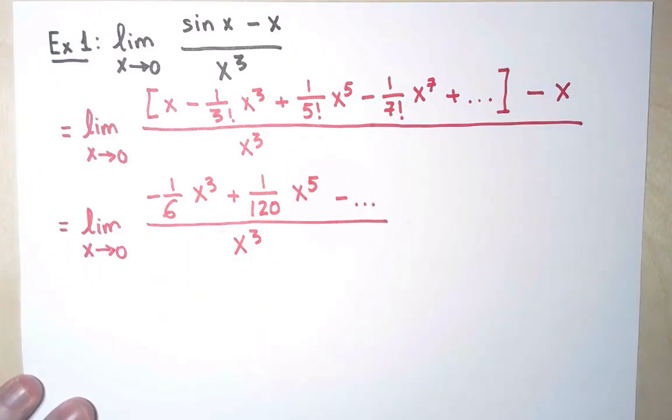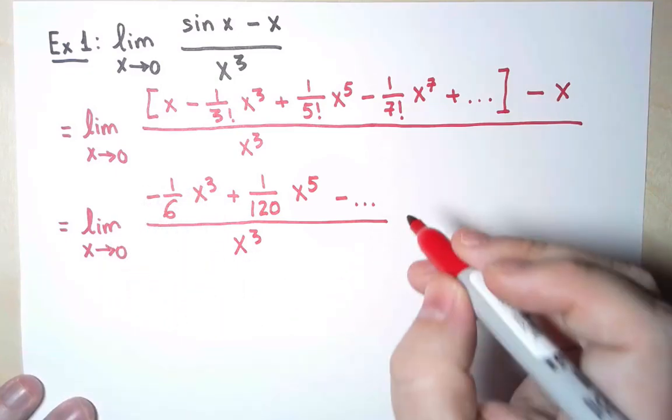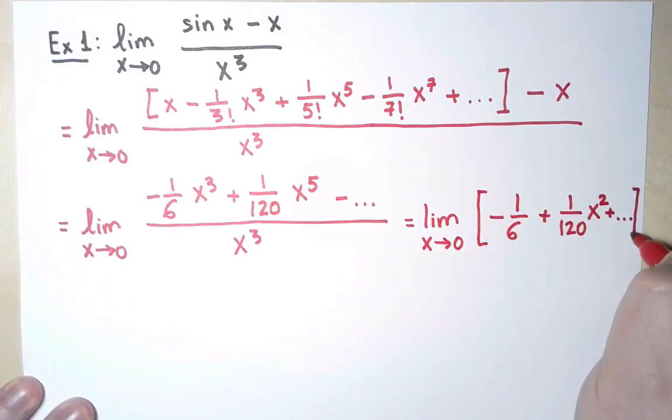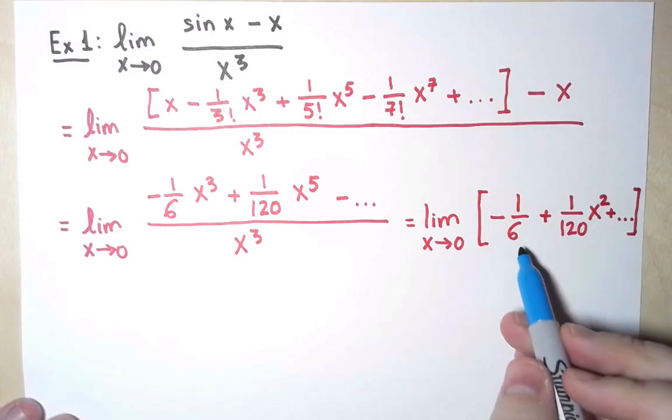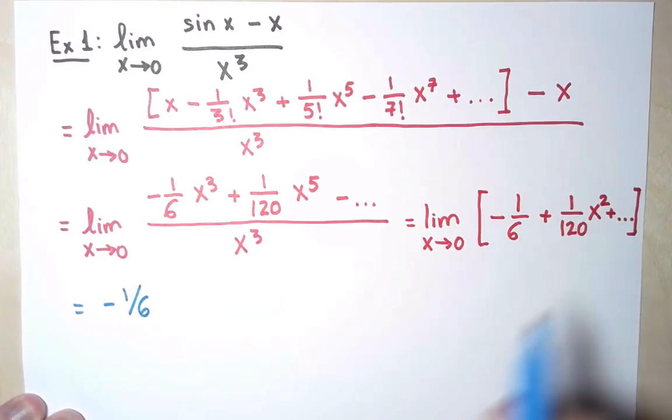In fact, the term x to the 5 is also not going to be needed. Because now that I have this, I can divide everything by x³, and it simplifies. And I am left with a limit that I know how to compute. The answer is given by this first term, is -1/6, and the other terms are irrelevant.